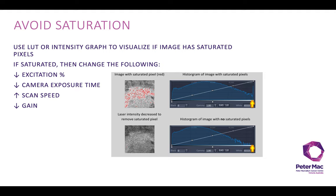Another way to avoid saturation: a lot of imaging softwares have a special lookup table which shows you if there are saturated pixels. In the example shown, the red pixels within the image are saturated, also visible in the image histogram as a peak at the very highest dynamic range value. If this is the case, you can decrease your excitation power percentage, decrease your camera exposure time, increase your scan speed, or decrease your gain if you're on a confocal.